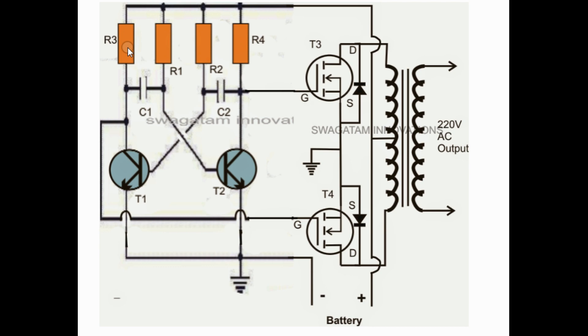R3, you should use around 680 ohms, and as well as R4, you should use 680 ohms. R1 and R2 should be 470 ohms. This will give you a frequency of operation of around 50 hertz.